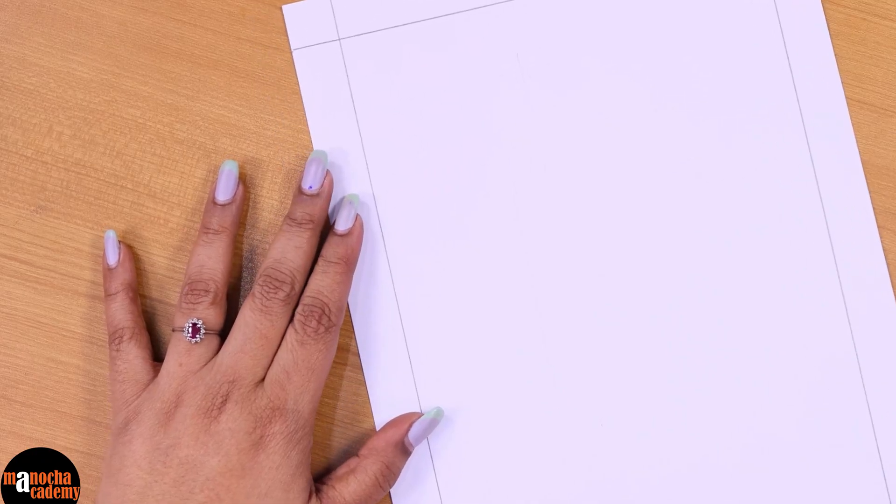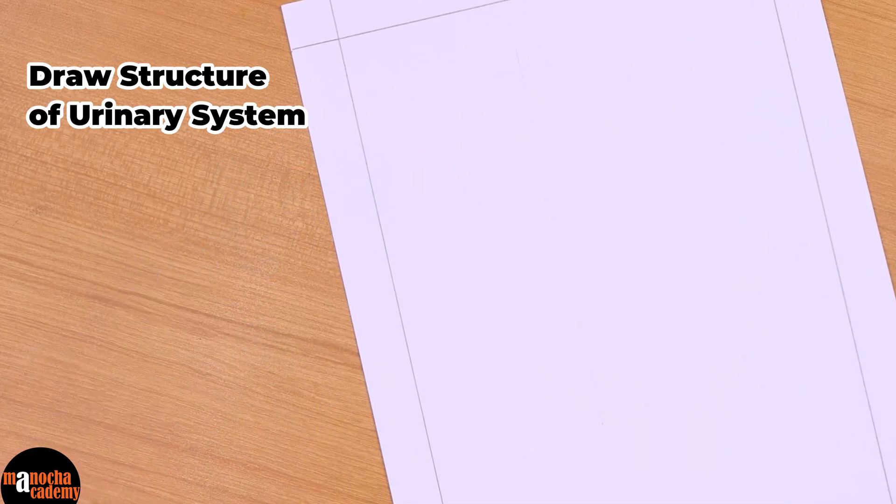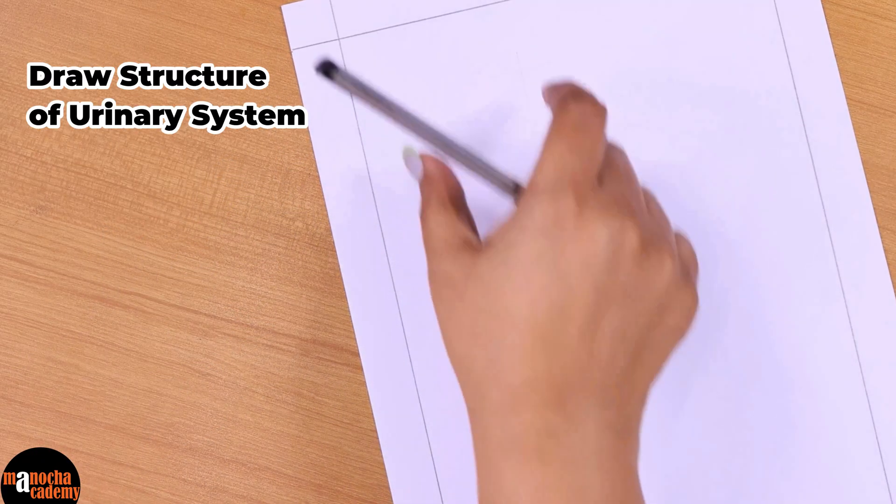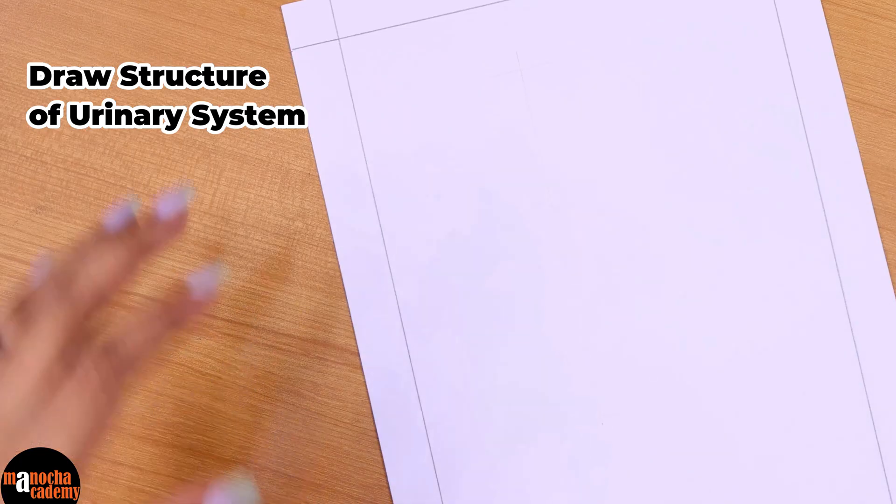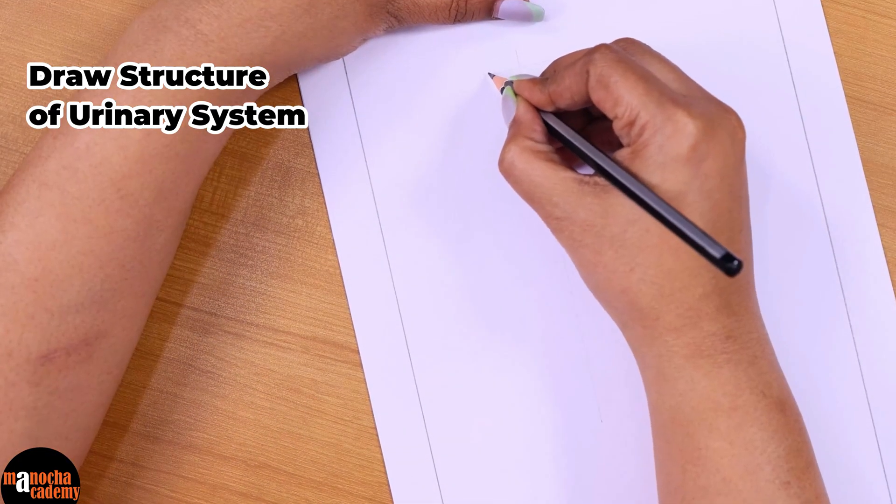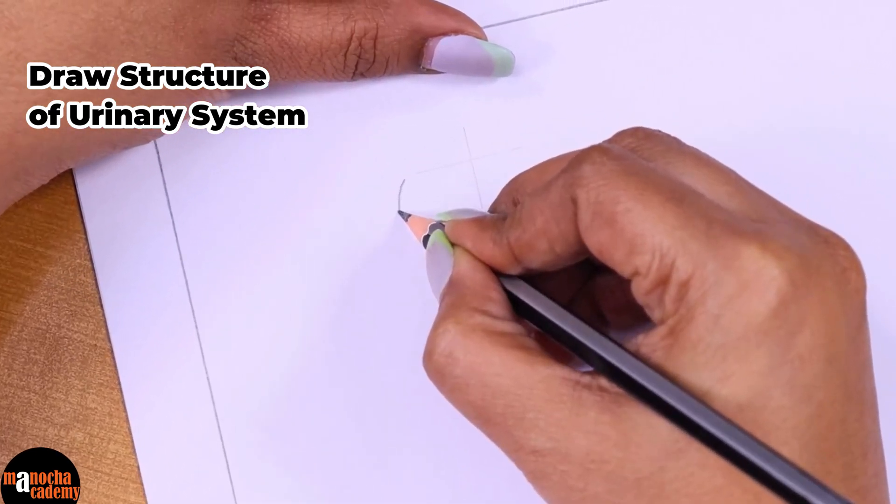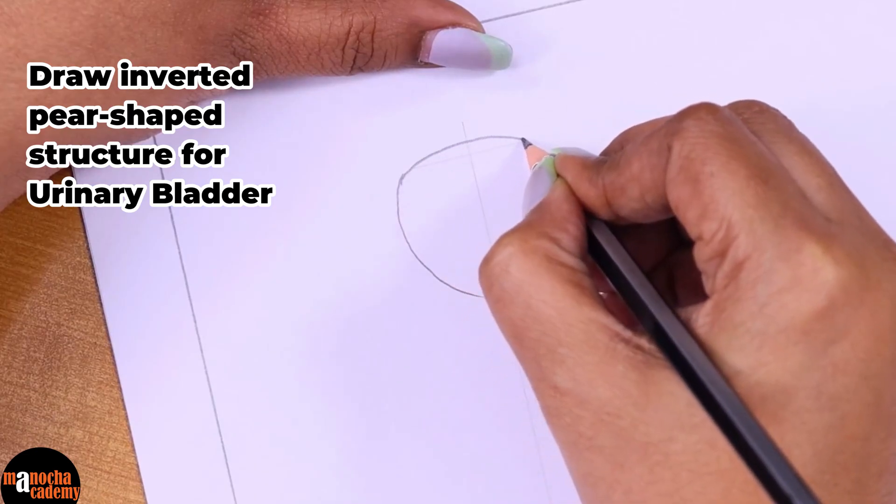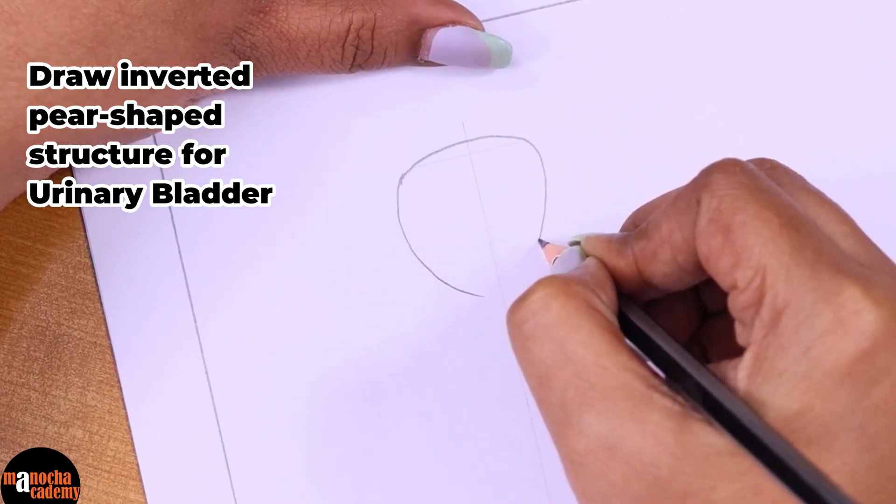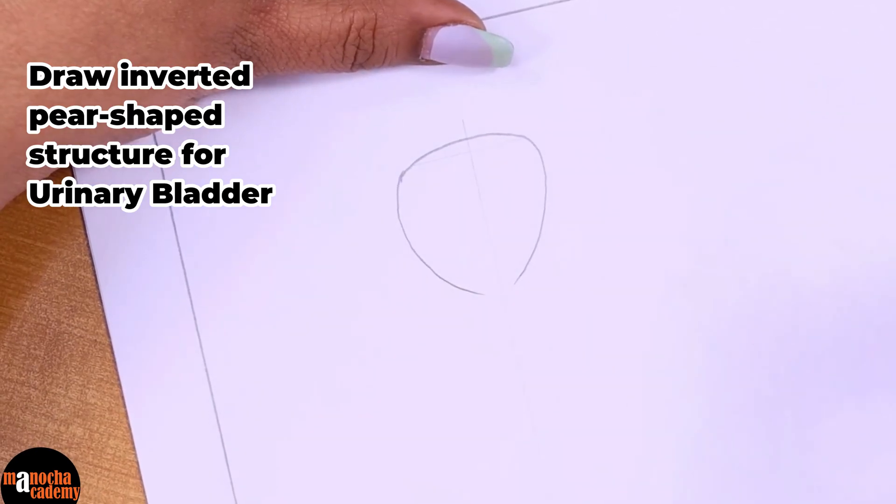First I will draw the structure of the urinary system. We are not drawing the kidneys but we will draw the rest of the parts because it will be easier for you to draw. First we will draw the urinary bladder which you all know is an inverted pear shaped structure.